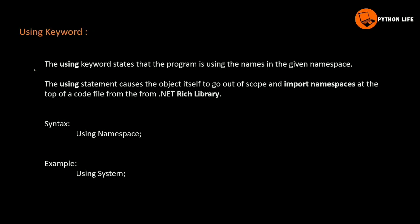Make content to pass in the program. If we have issues in a class library, there are few keywords or functionality. Therefore, you would install. The main user entry will need reusable code. The using statement causes the object itself to go out of scope and imports namespaces at the top of a code file from the .NET rich library.